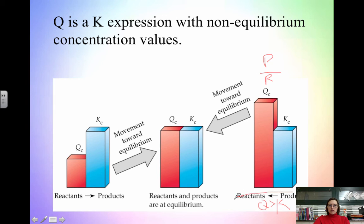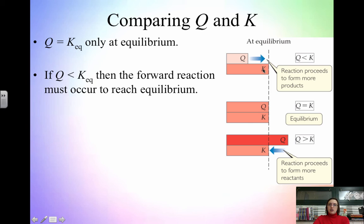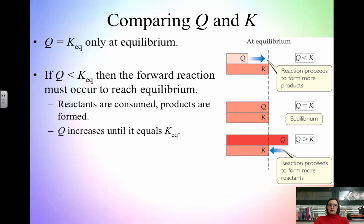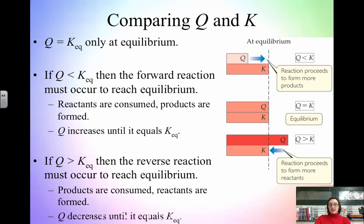To summarize: if Q equals K, the system is at equilibrium. If Q is less than K, the forward reaction occurs to form more products — reactants are consumed, Q increases until it equals K. If Q is greater than K, the reverse reaction occurs — products are consumed, reactants are formed, and Q decreases until it equals K. This tells us both whether a reaction is at equilibrium and how it will shift to get there.